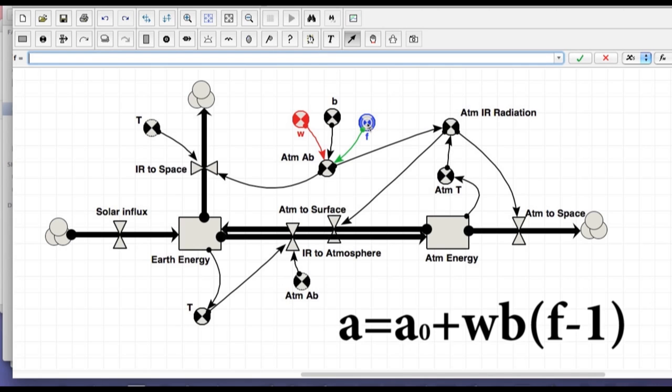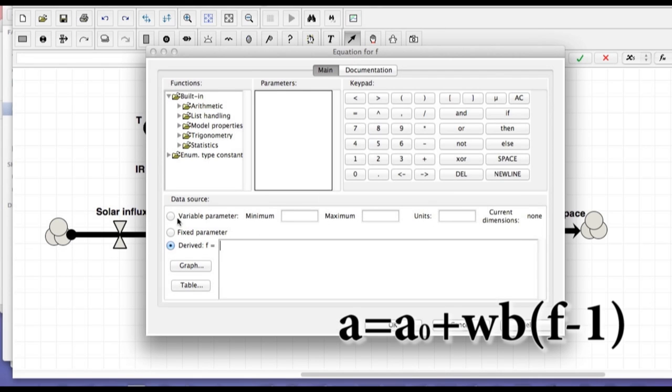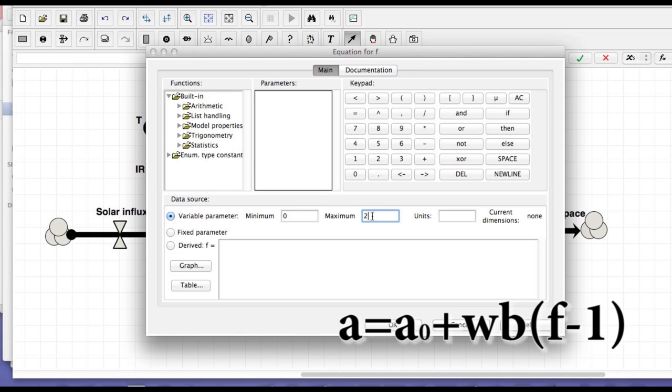And we have to define these things. Now F is our forcing and it's a variable parameter. We could have no forcing. That's possible. 0. Doubling would be 2. Let's go ahead and take this up to 3 just to give it some room to play around with. We're going to start off with no forcing. That's a 1. A 1 forcing.